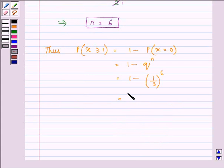So this further implies 1 minus the value of 1/3 raised to the power 6, which comes out to be approximately 0.0014. So we have it like 0.9986 approximately.